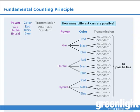Here comes the most important part. Notice that when we were constructing our tree diagram, we had three options for the power source, three options for the color, and two options for the transmission. Notice that when we find the product of these three values, we get 18 — the same number we calculated for the total number of different cars we can build. This is no coincidence. In fact, this result complies directly with the fundamental counting principle.